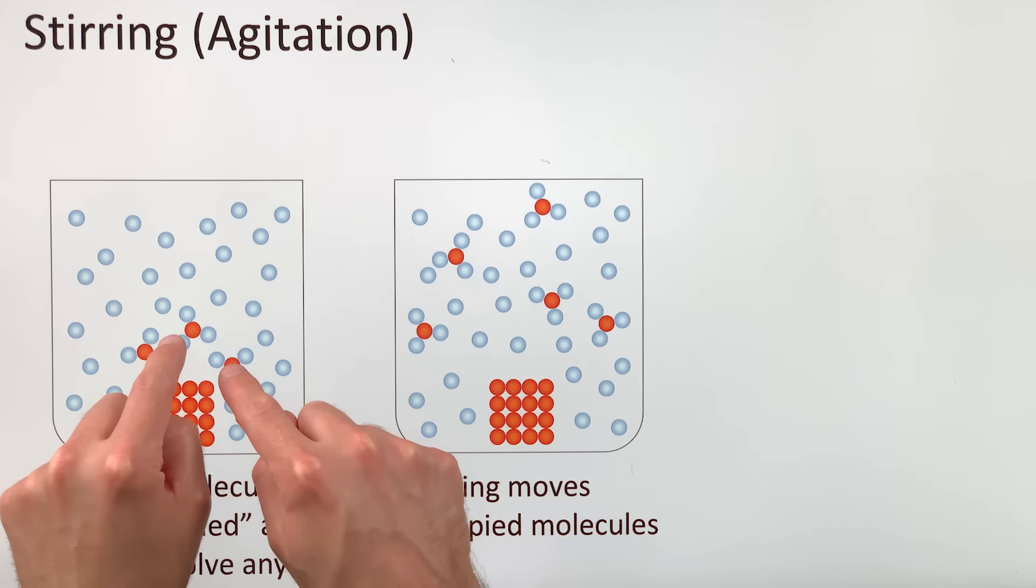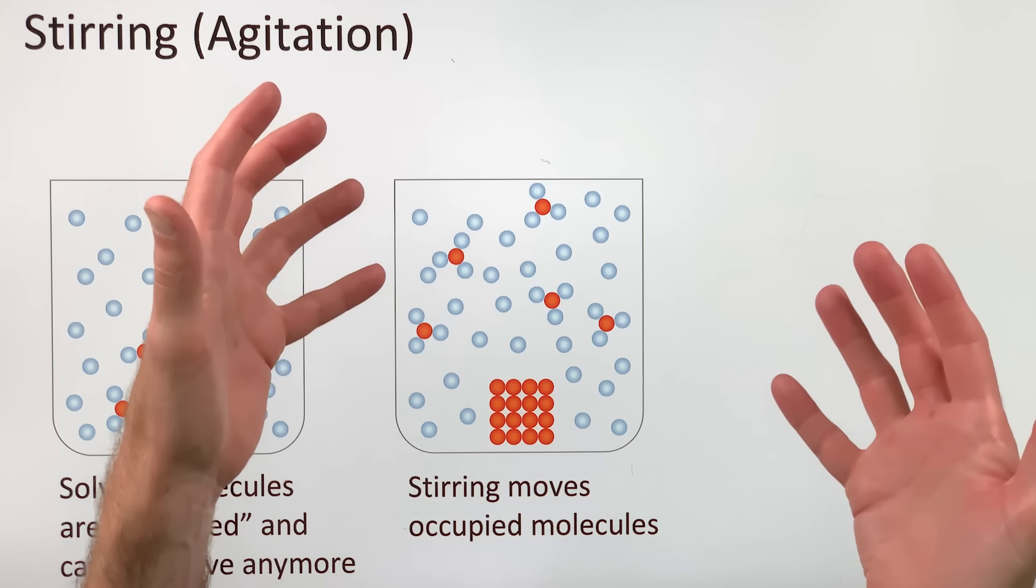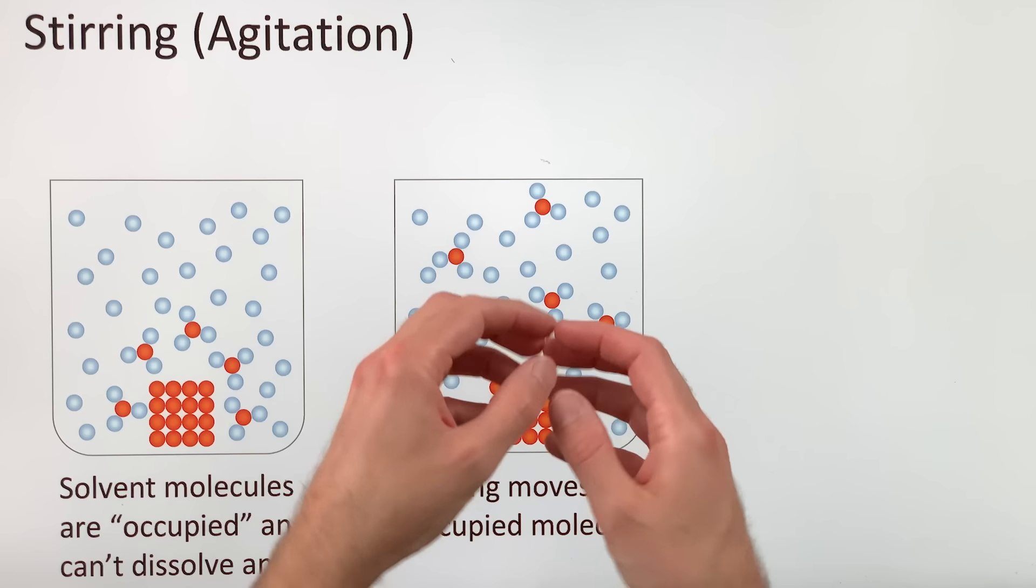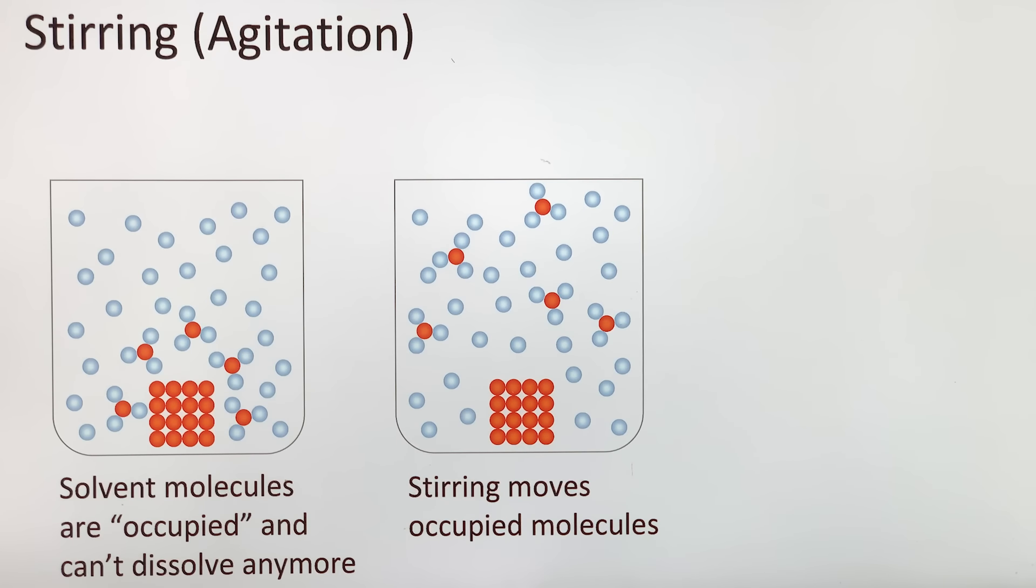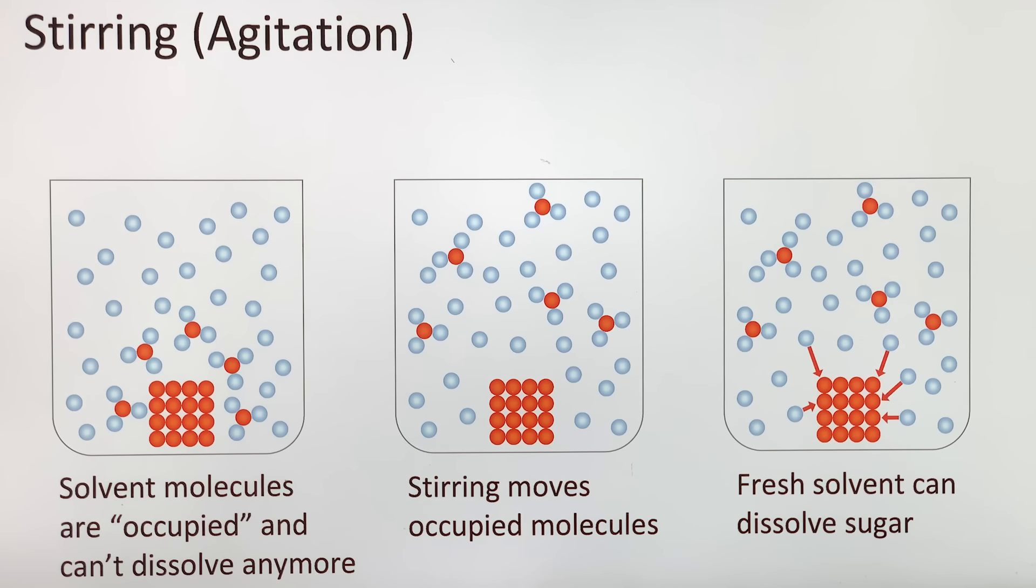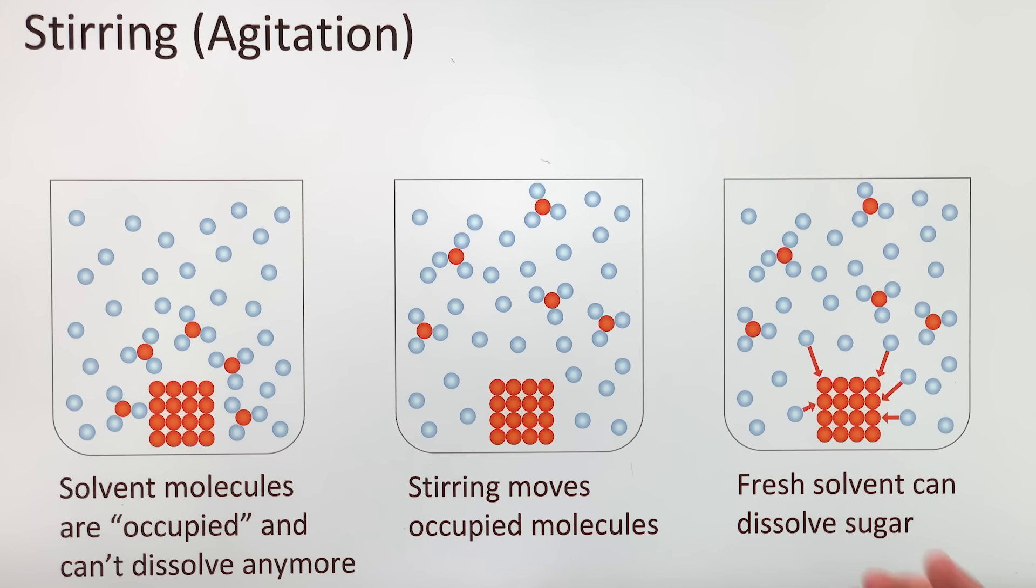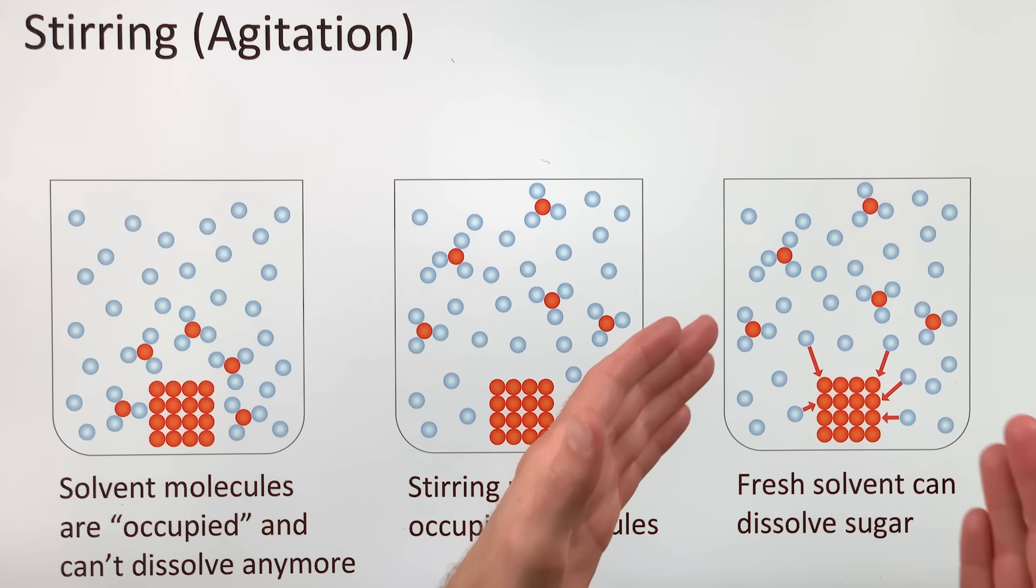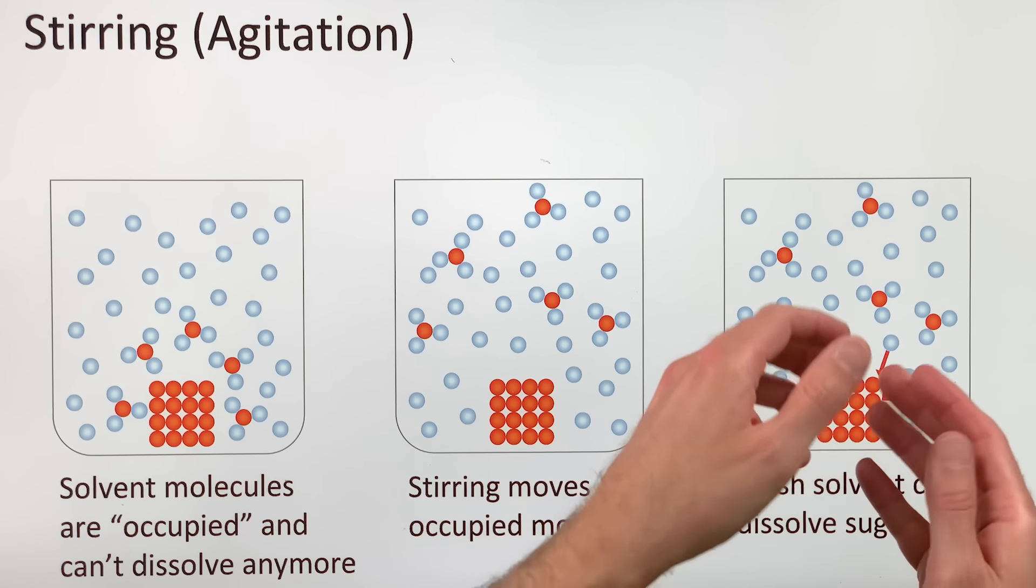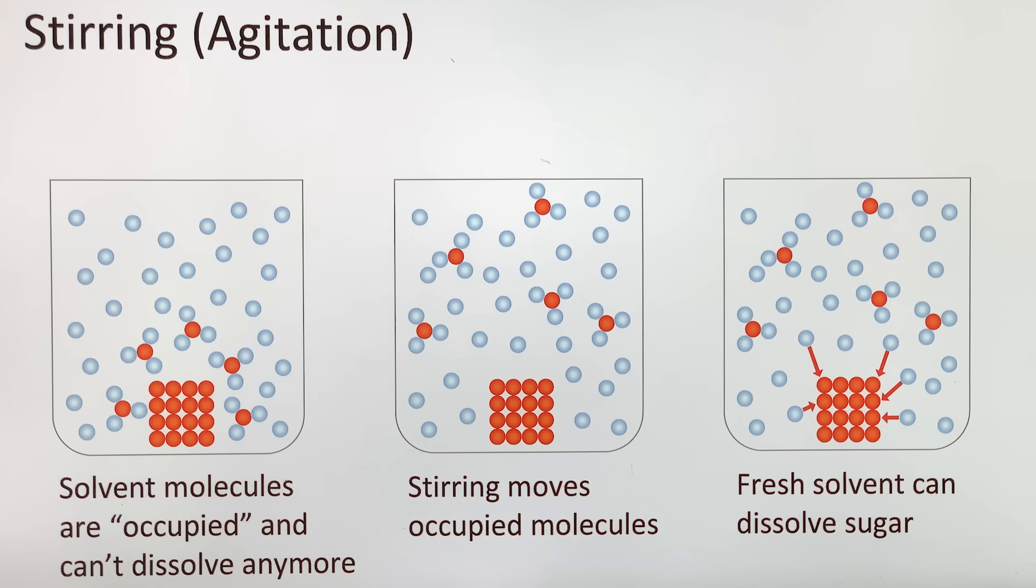But imagine that you stirred this mixture. You'd move these occupied solvent molecules and spread them around. The stirring moves these occupied water molecules away. The stirring also brings fresh water molecules in contact with the sugar. Those new water molecules can then interact with the sugar, help pull them away, and do more dissolving. So essentially, this process brings more water molecules into contact with the undissolved solute. And all of the stirring will cause faster dissolving.